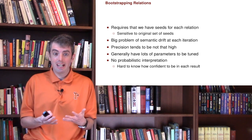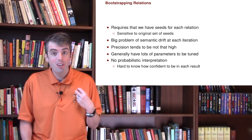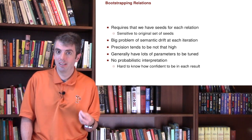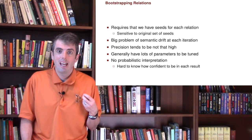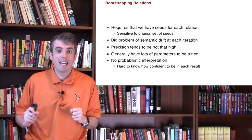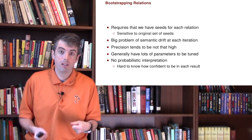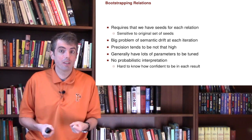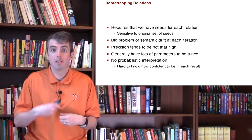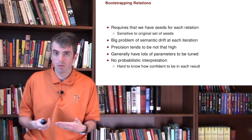The downside, however, is that even though we start with high-precision seeds, as we expand out the set of relationships, we can quickly go astray — and it's really hard to tell when you've gone astray. You basically need to have a human to verify whether the additional facts that you've extracted still make sense and are true.